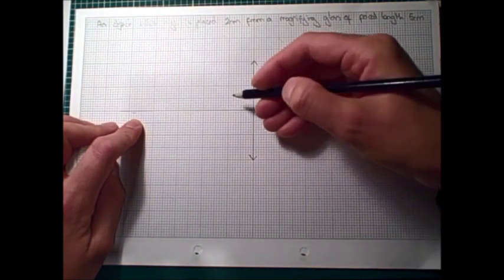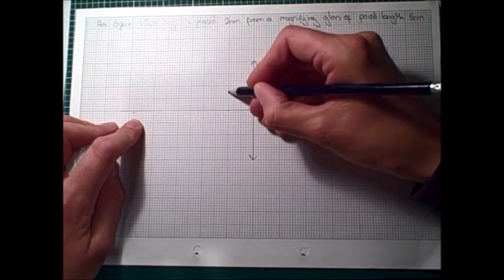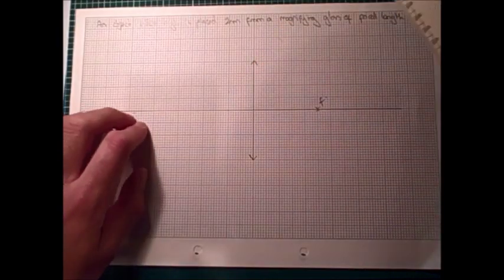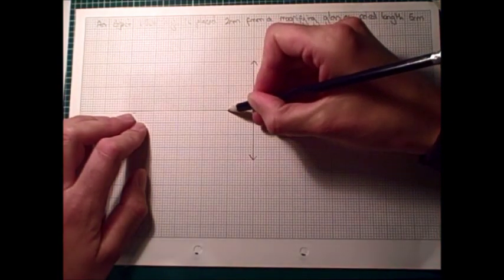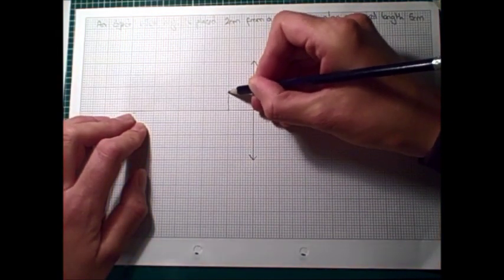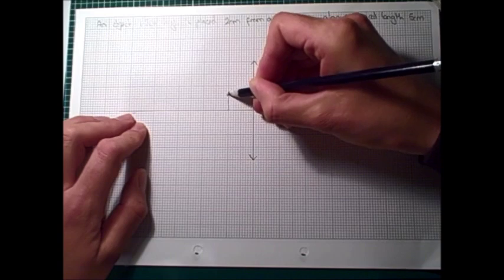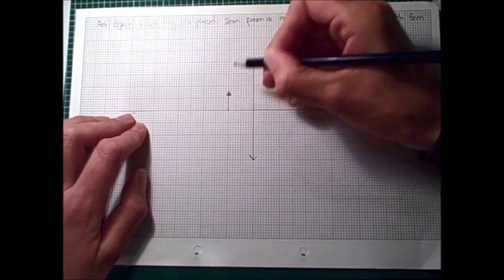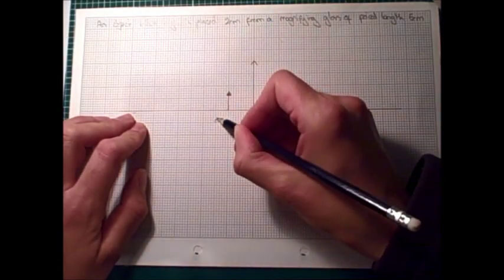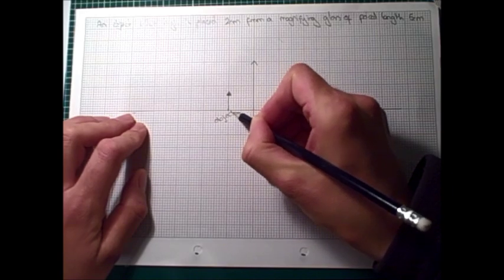So, that's 1, 2cm away. And it's 1.5cm high, which means we should draw in our object here. And as before, we'll do a little arrowhead so we can see which way up our object is. And we'll aim for that object.